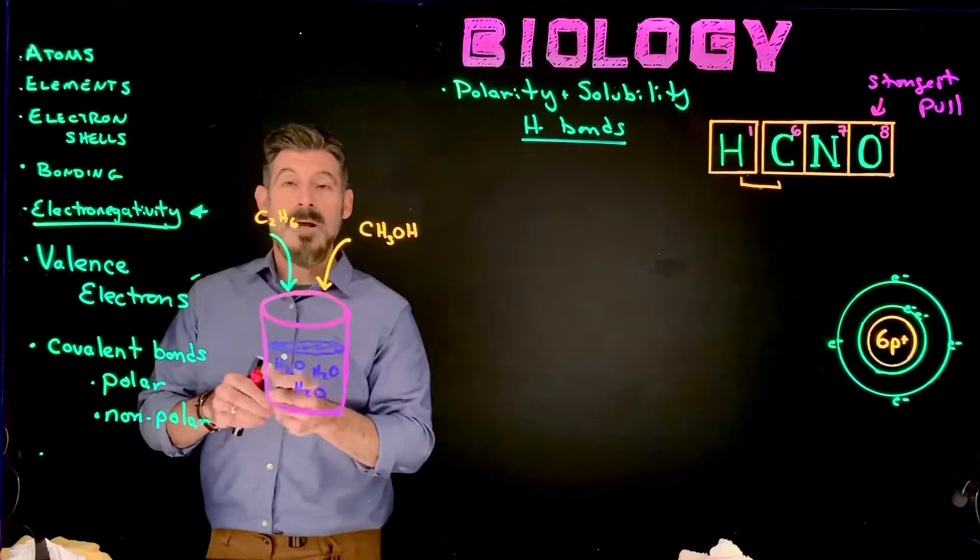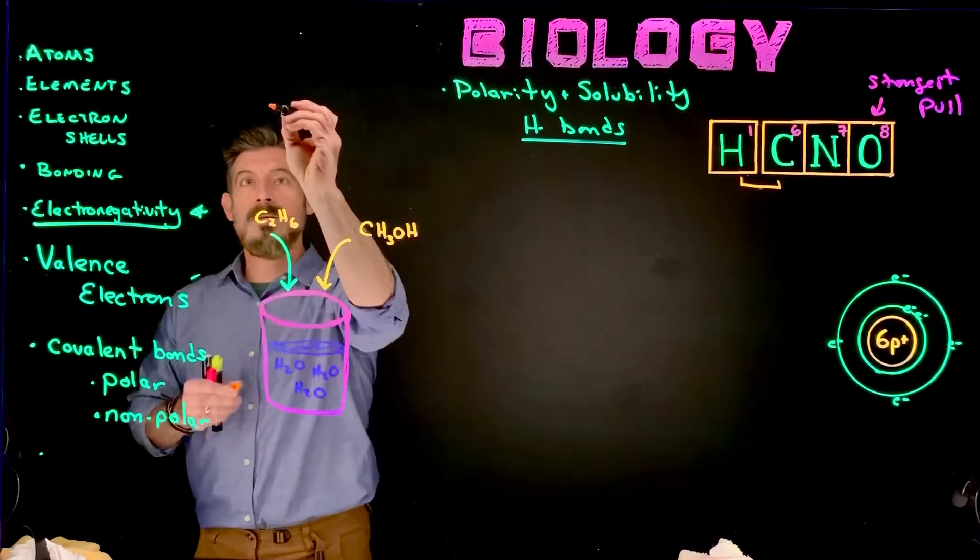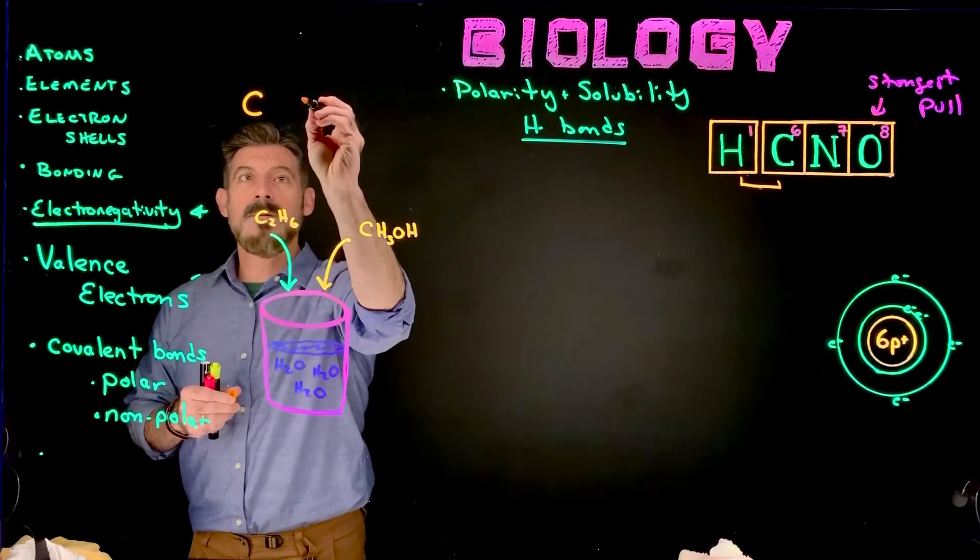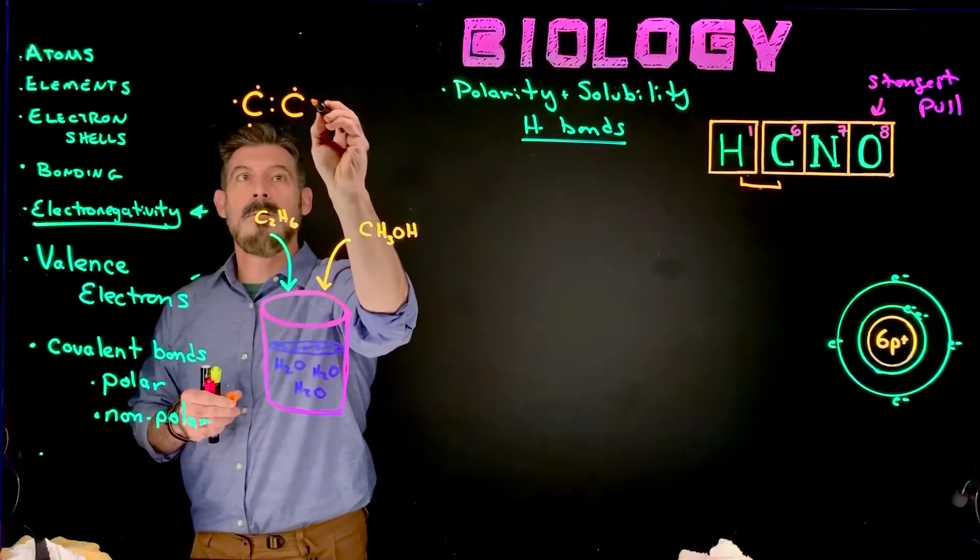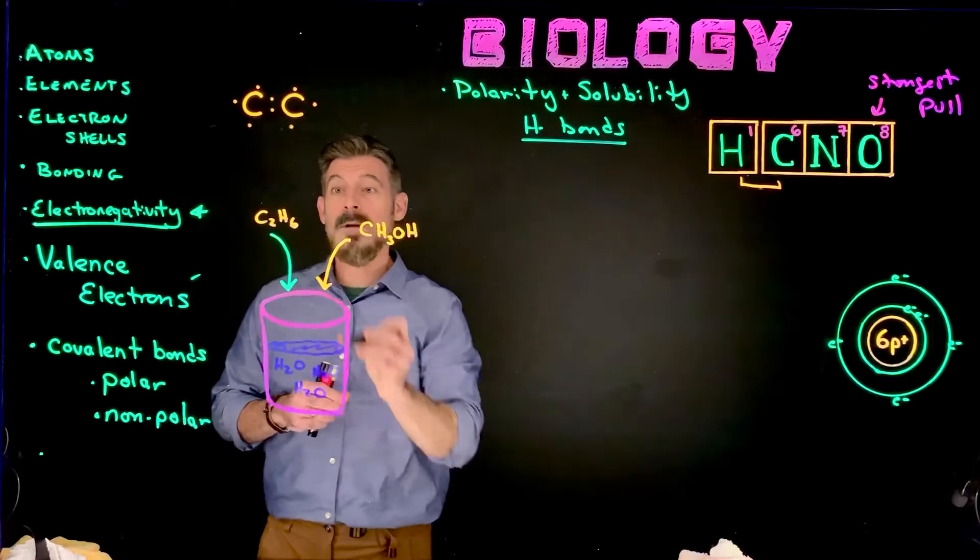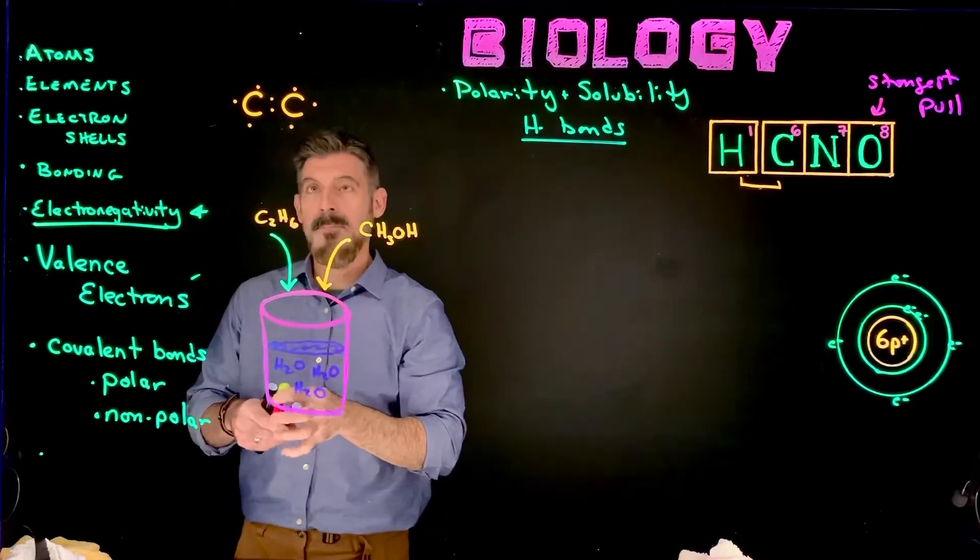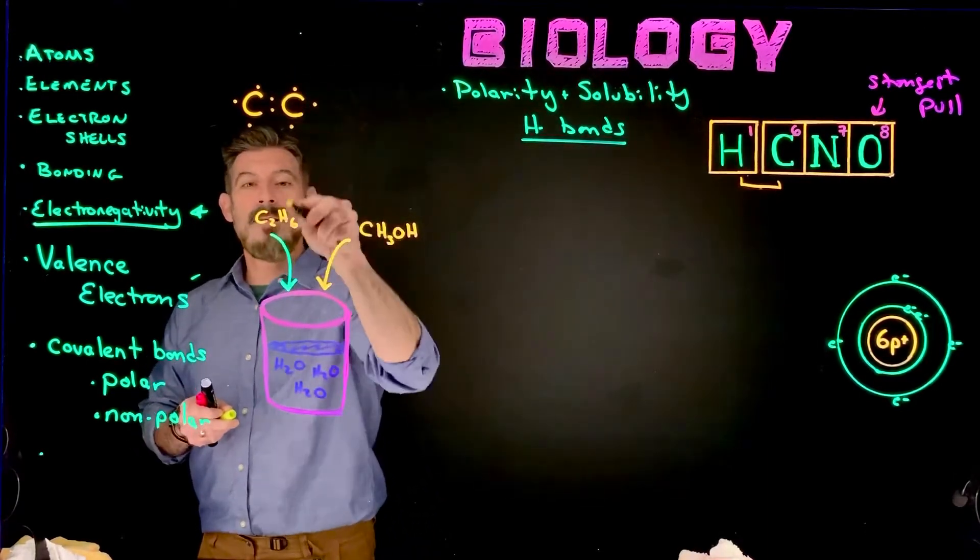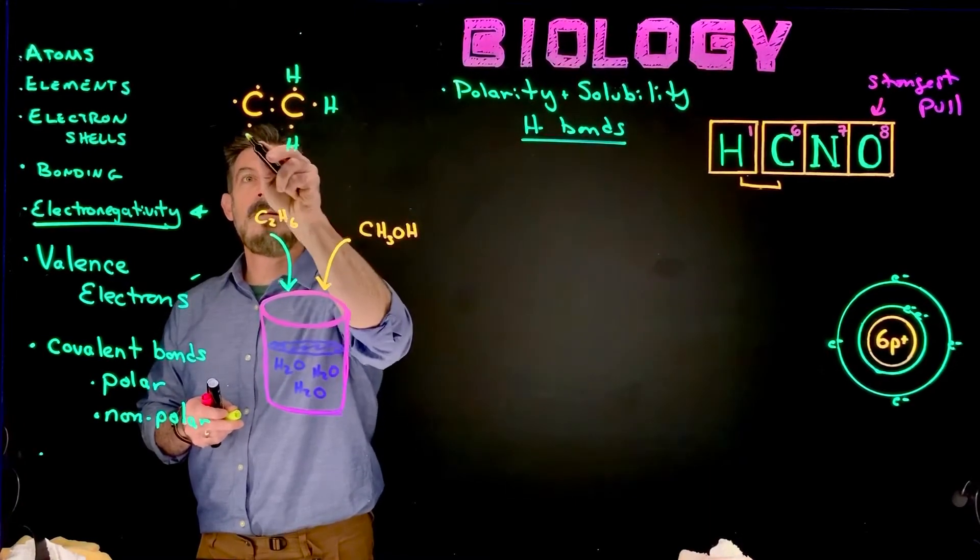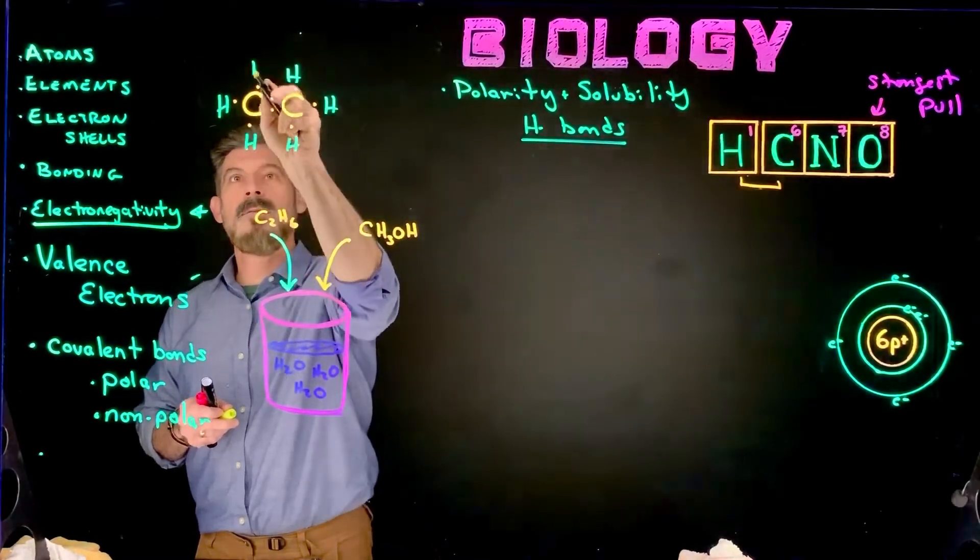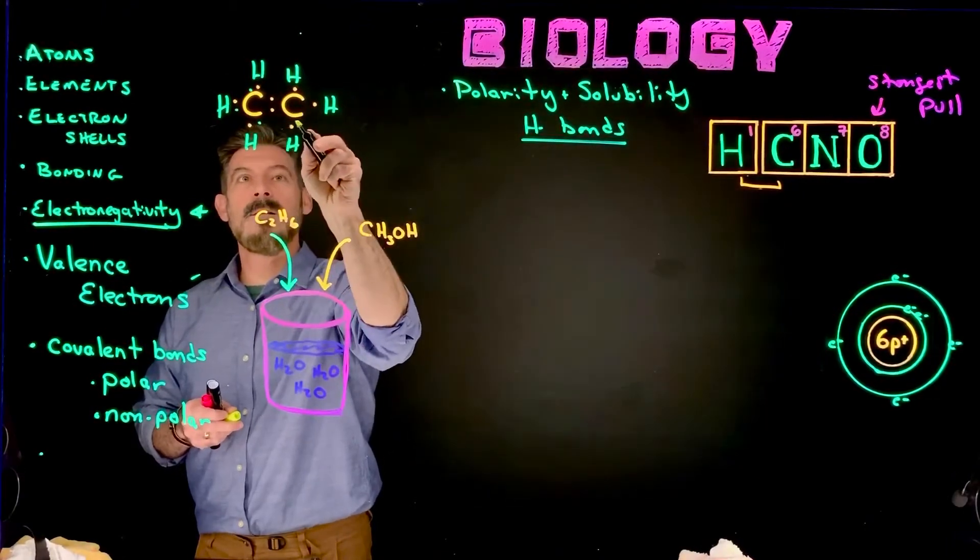So for example here, I drew C2H6. So let's take this, we're going to get two carbons. Each of them has its four bonds, and we're going to put the two of them together, like that. And then we're going to add in the hydrogens, the six hydrogens. One, two, three, four, five, six, each with their electrons.